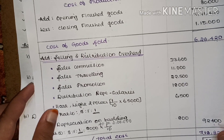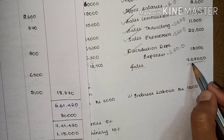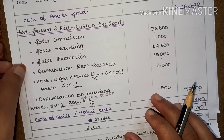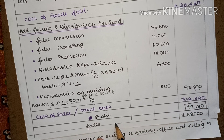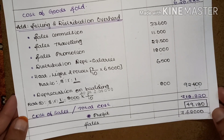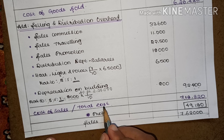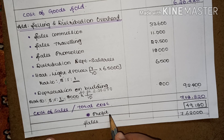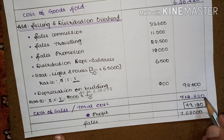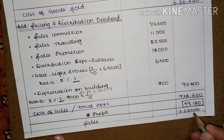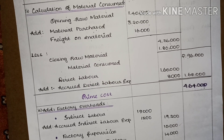The sales amount given in the question is ₹7,68,000. Total cost is ₹7,18,820, which is less than sales, so we are getting a profit. Profit = ₹7,68,000 − ₹7,18,820 = ₹49,180. When you add the profit to total cost, you get the sales amount. This is how you prepare a cost sheet or statement of cost. I hope you all understood. Thank you.